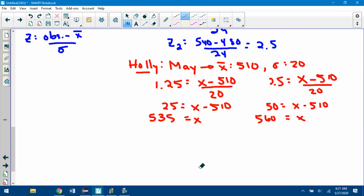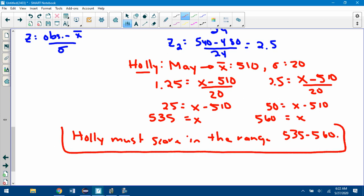Do the same over here. So 2.5 times 20 is 50, so 50 equals x minus 510. Add the 510 over, you get 560. So the range of scores that Holly would need, Holly must score in the range 535 to 560. So she has to score a little bit higher since her test maybe was a little bit easier given the mean, to be as good as Claire.